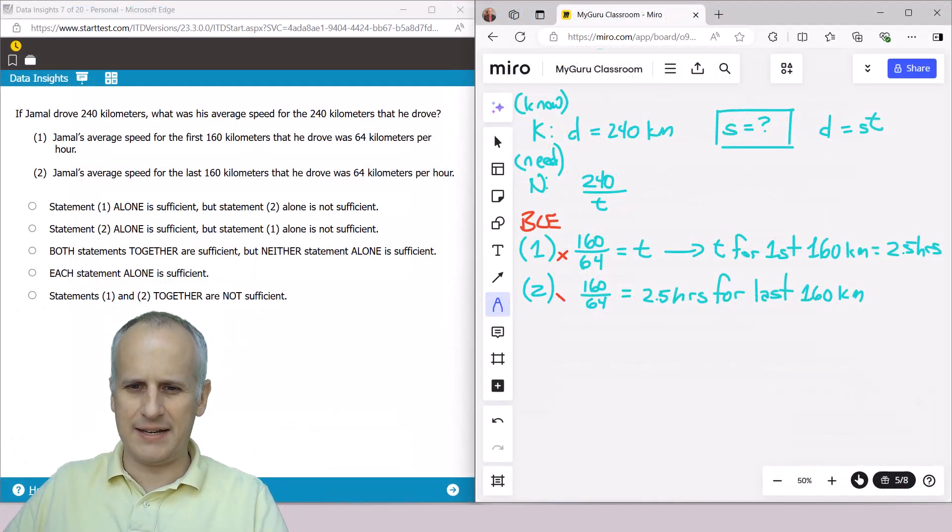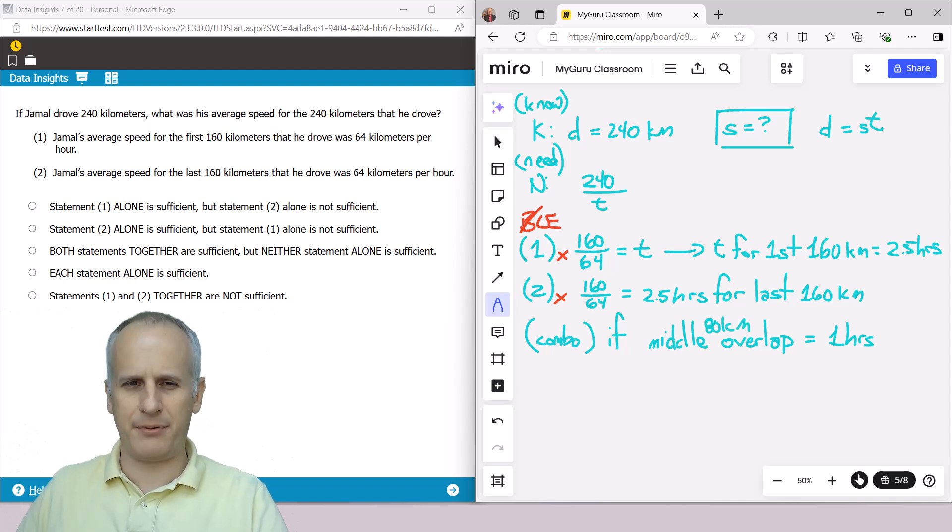And we should know already that that is not sufficient, which eliminates choice B. But then we've got to think about this critically for our combo because we've actually got 320 kilometers here, and we've got to think about what the implications of that would be. So if the middle overlap is equal to one hour, so meaning the middle 80 kilometers, because there's an overlap. If we've got 160 and 160, that adds up to 320. 320 minus 240 is an overlap of 80.